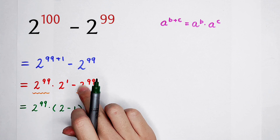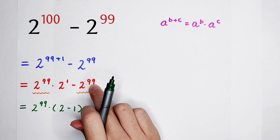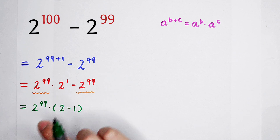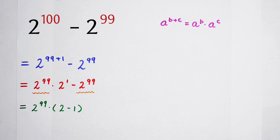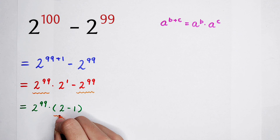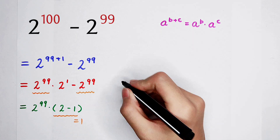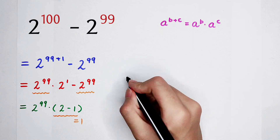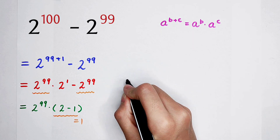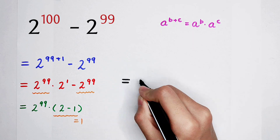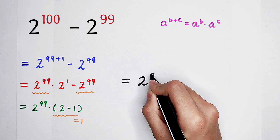Because 2 to the power of 99 divided by 2 to the power of 99 is 1. Now, calculate 2 minus 1, which is 1. So, 2 to the power of 99 times 1 is 2 to the power of 99.